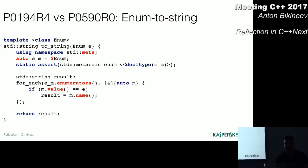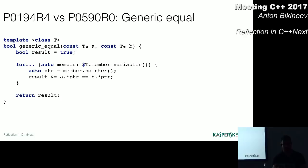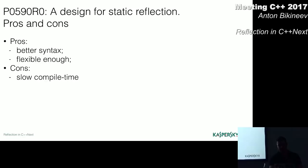Then, with the help of member function enumerators, we reflect the meta object sequence. Essentially, it is a tuple. And with the help of function for each, we iterate over all these members. And here is how generic equal function looks in this proposal. I don't know about you, but my personal take on this, that the value syntax is much more readable.